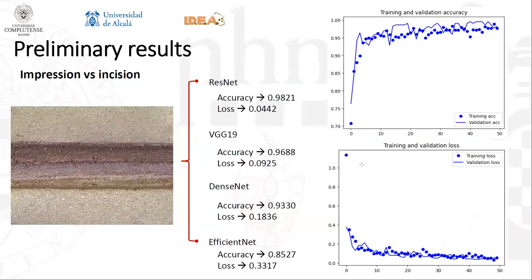After some preliminary tests, we decided to trim the images just to the marks themselves and to turn them to grayscale, to avoid that the difference of clay color due to firing could be used as a significant variable by the algorithm.